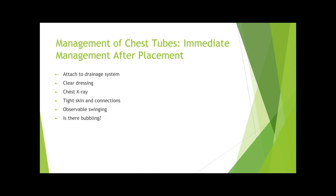After the chest tube is inserted, it should be attached to the drainage system such as a pleurevac. A chest x-ray should be immediately requested to ensure adequate position and to assess for any complications. The drainage system should be kept below waist height to ensure drainage and avoid retrograde flow. A clear dressing should be used to cover the drain site. The skin should be assessed to ensure it is tight around the area of chest tube placement, and the tube should be assessed to make sure it is appropriately secured and connected to the drainage system. Patency of the system can be assessed by observing drainage of fluid into the collection chamber.